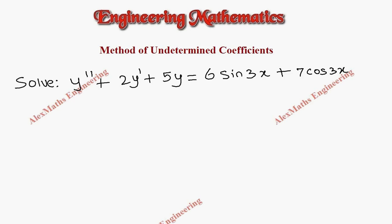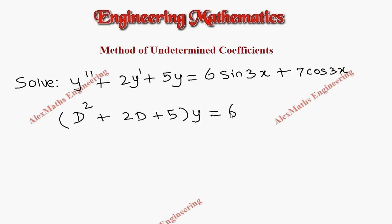Hi students, this is Alex. In this video we are going to solve a differential equation using the method of undetermined coefficients. The equation is (D² + 2D + 5)y = 6sin3x + 7cos3x.